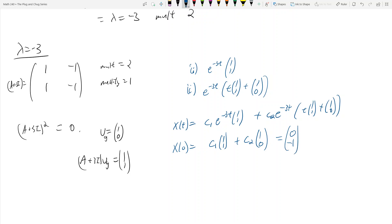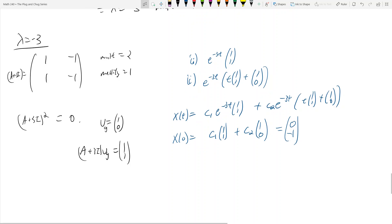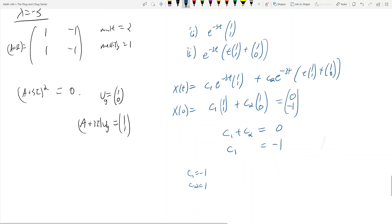And now we need to solve for c1 and c2. You have c1 + c2 = 0 and c1 = -1, because I just multiply this in, and I multiply c2 in, and then the top entries have to equal the top entry, the bottom entry has to equal the bottom entry. So that's how I got this system. And so c1 is equal to -1, and c2 has to be positive 1.